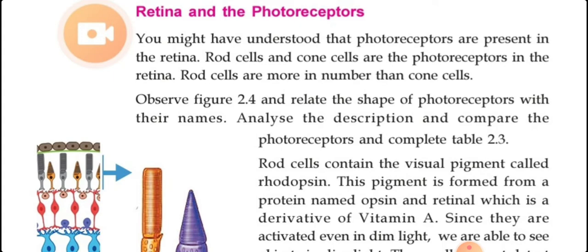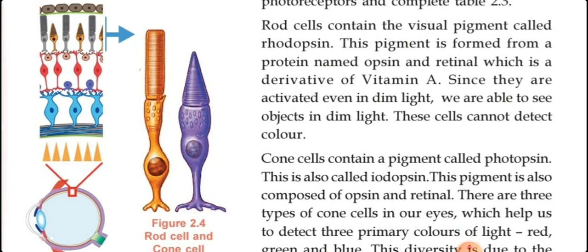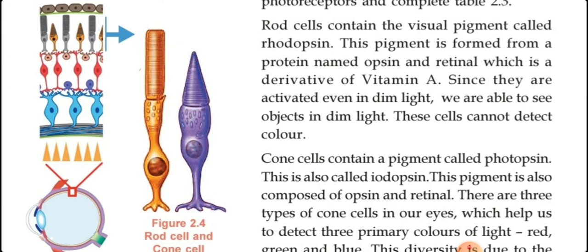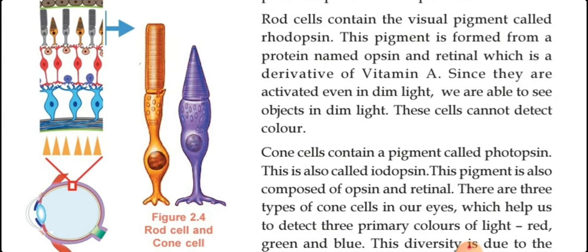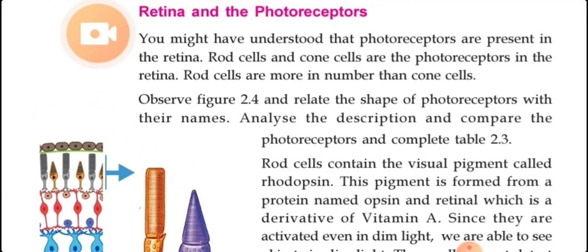Before entering into the discussion, just observe these images. Two types of images you can see on the screen — one is having a violet color and one is having a golden color. Don't think about the color; the shape and their parts you just observe. That is the important part that we have to discuss.